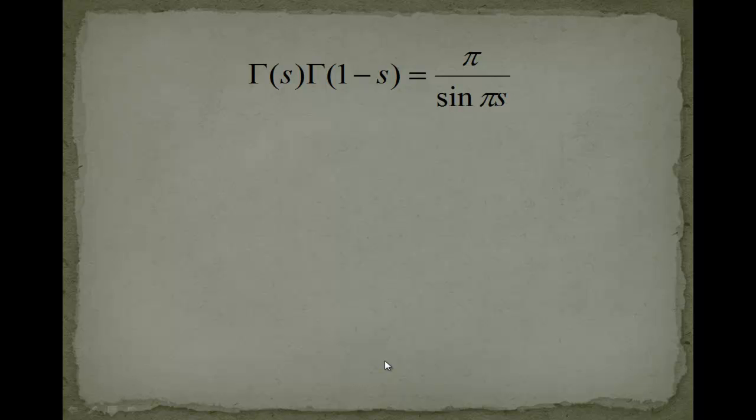Our starting point is just the functional equation, the new functional equation that we found out for the gamma function. In the previous video we found out that gamma of s multiplied with gamma of 1 minus s is equal to pi over sin of pi s.